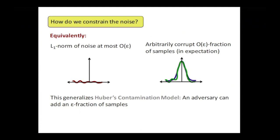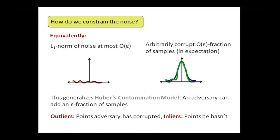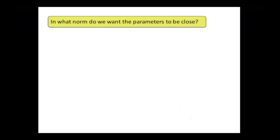This generalizes something called Huber's contamination model. In the strongest version, an adversary can look at your samples and then decide which epsilon fraction he wants to corrupt, and he can do whatever he wants with them. I'll refer to the outliers as the things the adversary has corrupted, and the inliers are whatever he hasn't touched. Now that we have our constraint on what the adversary is allowed to do, the natural question is how we set up our goals — what do we mean by estimating the parameters in the presence of noise?